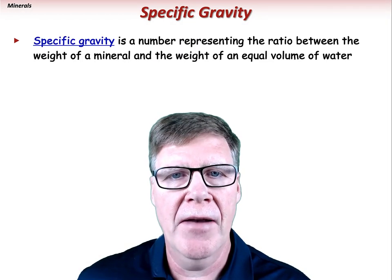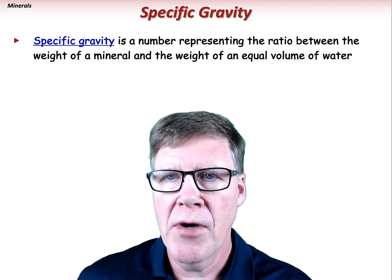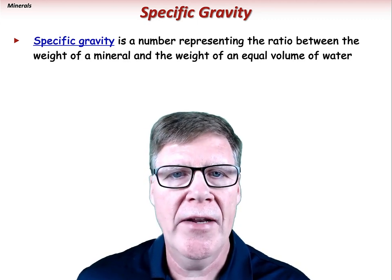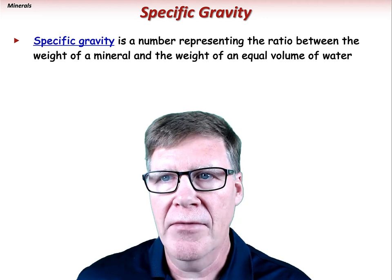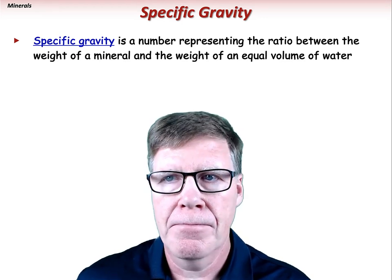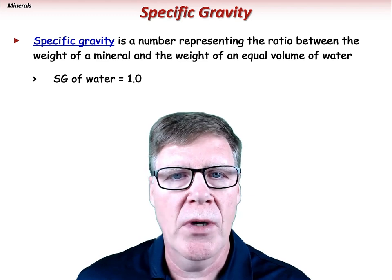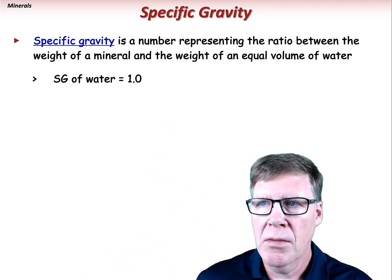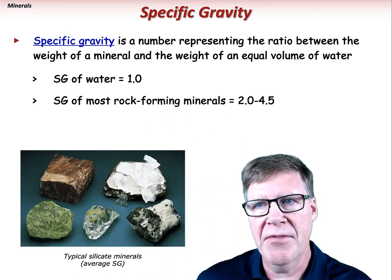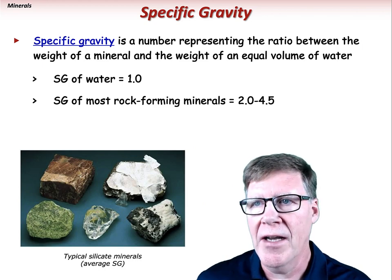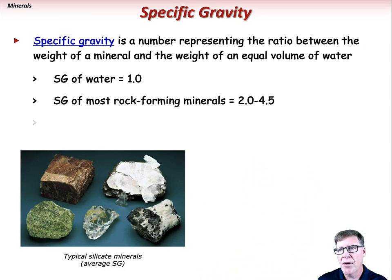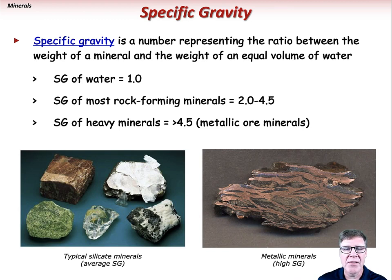One way to describe the heaviness of a mineral is with specific gravity — the ratio of the weight of the mineral to the weight of an equal volume of water. Water has a specific gravity of 1.0. Most rock-forming minerals have a specific gravity between 2.0 and 4.5. Specific gravity greater than 4.5 is considered heavy and is typified by many metallic ore minerals.